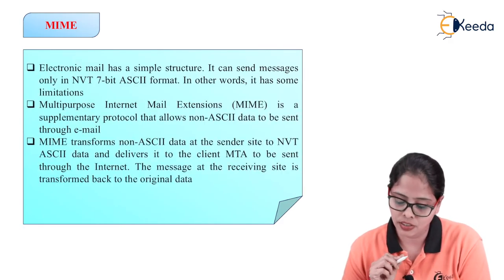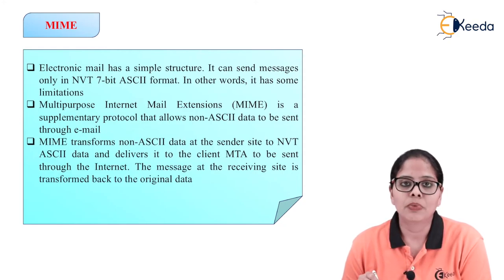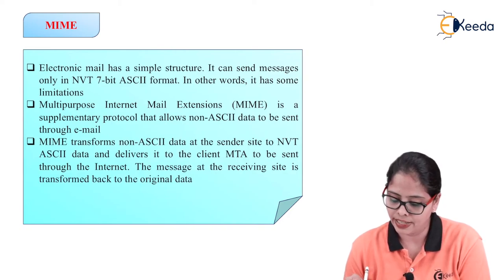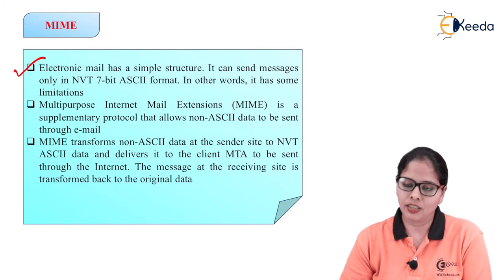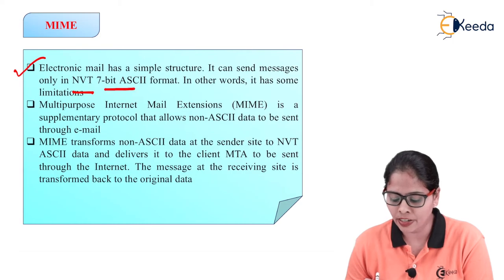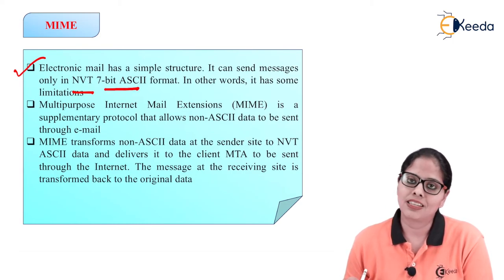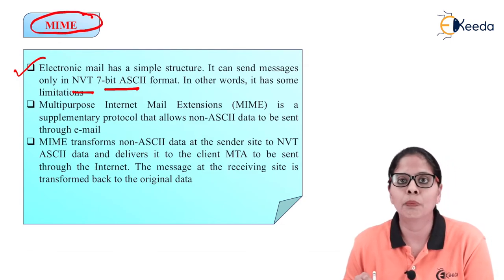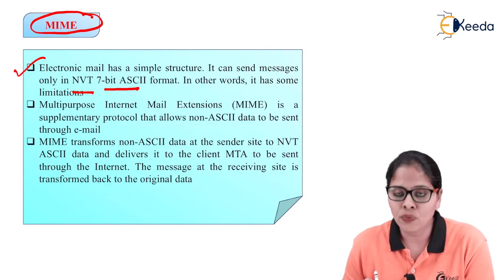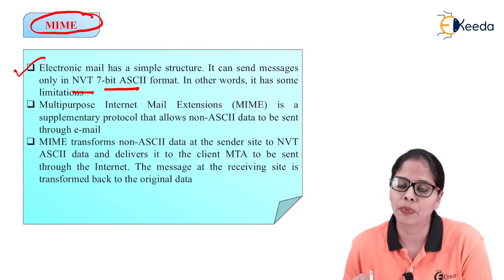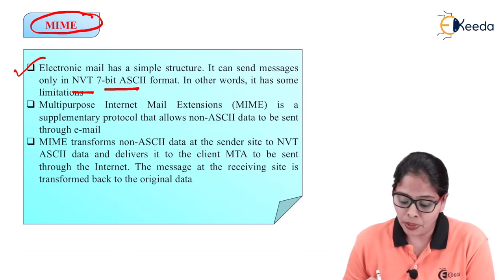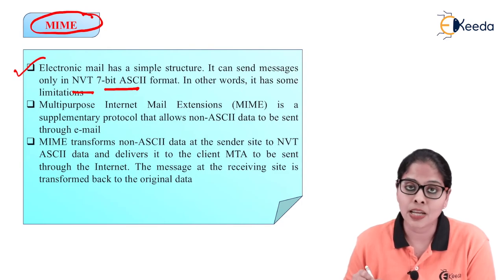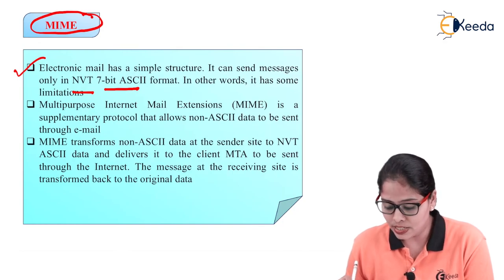Now let us discuss MIME — Multipurpose Internet Mail Extension. The electronic mail has a simple structure and can send only NVT 7-bit ASCII format. When MIME was not there, with email you could only send NVT 7-bit ASCII format. The 7-bit ASCII format does not allow languages like German, French, or Russian, and you cannot send binary data, audio, or video. MIME is a supplementary protocol that allows non-ASCII data to be sent through email.